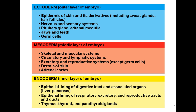Each germ layer plays a role in the development of specific structures. The ectoderm develops the epidermis, nervous and sensory systems, pituitary gland, adrenal medulla, jaws, teeth, and germ cells. The mesoderm — the middle layer — is responsible for the skeletal and muscular system, circulatory, lymphatic, excretory, and reproductive systems (but not germ cells), the skin dermis, and the adrenal cortex. The endoderm makes the epithelial lining of the digestive tract and associated organs such as the liver and pancreas, the lining of the respiratory, excretory, and reproductive tracts, and the thymus, thyroid, and parathyroid glands.